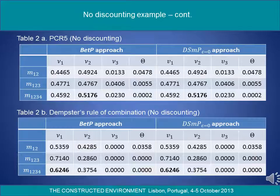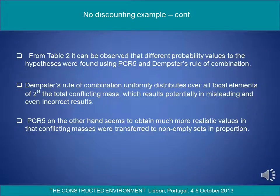Table 2a shows the results based on PCR5 and Table 2b shows the results based on Dempster's rule of combination. From Table 2, it can be observed that different probability values for the hypothesis were found using PCR5 and Dempster's rule of combination. Dempster's rule of combination uniformly distributes over all focal elements of 2^θ the total conflicting mass, which results potentially in misleading and even incorrect results. PCR5, on the other hand, obtains much more realistic values in that conflicting masses were transferred to non-empty sets in proportion.